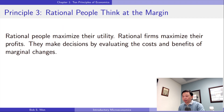Economists usually assume that people are rational. Rational people maximize their utility or profit given the available opportunities. Firms decide how many workers to hire and how many products to produce to maximize profits. Individuals choose how much time to spend working and what goods and services to buy to maximize their utility.